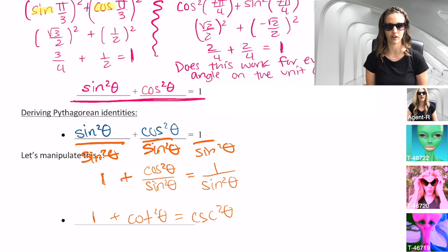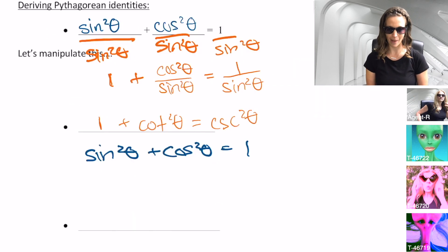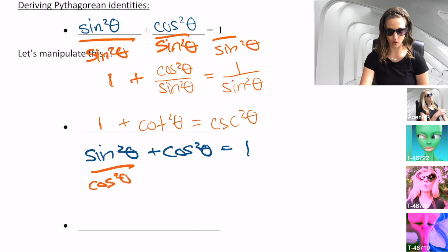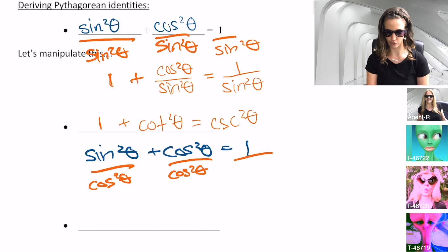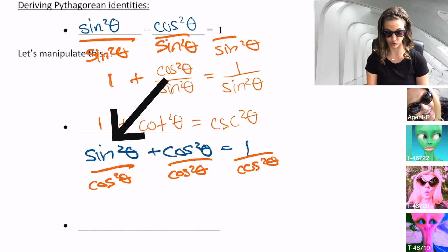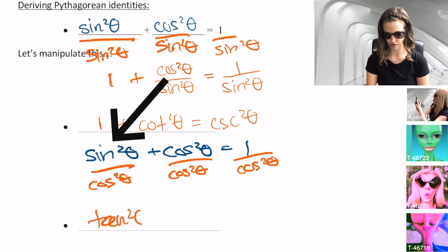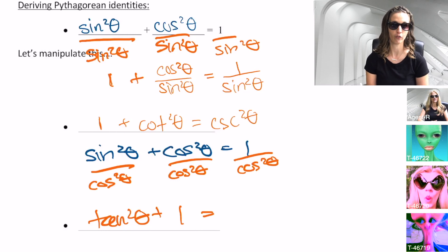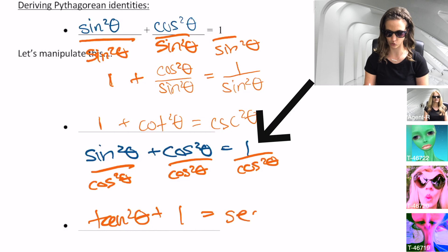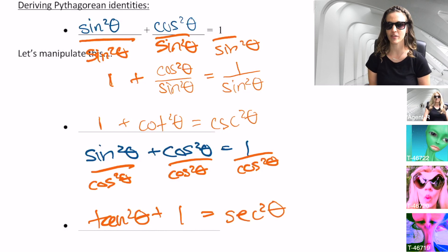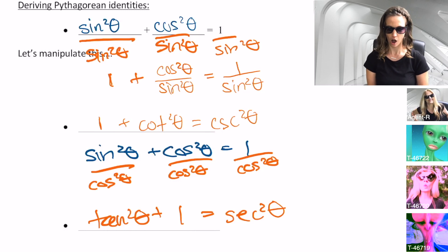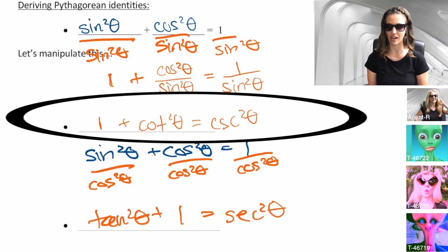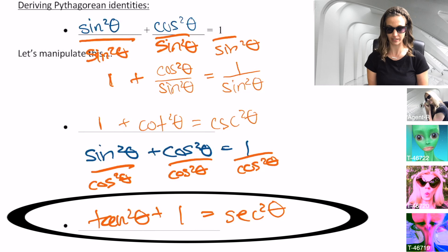Let's find the third form. Back to the original identity: sin²θ + cos²θ = 1. Now let's divide by cos²θ. sin²θ ÷ cos²θ: sine over cosine is tangent, so that's tan²θ. cos²θ ÷ cos²θ = 1. And 1 ÷ cos²θ: 1 over cosine is secant, so that is sec²θ. Our three Pythagorean identities are: sin²θ + cos²θ = 1; 1 + cot²θ = csc²θ; and tan²θ + 1 = sec²θ.